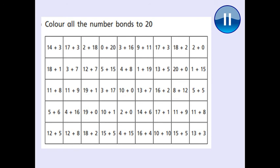This is the last job — I promise. Colour in all the number bonds to twenty. If you don't want to colour them in because it's going to take a long time to copy this table out, you could just point to the number bonds to twenty. But if you can draw it out and write all those number sentences in, the end product is really cool. Remember you're looking for one ten and then those two number bonds that make the other ten. Pause the video, find all the number bonds, and I will show you the answer on the next page.